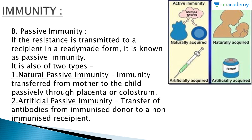Passive immunity is when the resistance is transmitted to a recipient in a ready-made form. In this immunity, antibodies are simply provided to the individual from outside.